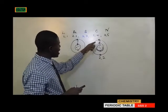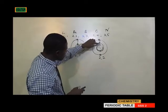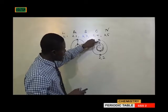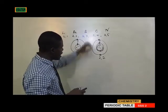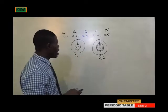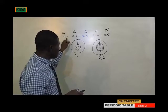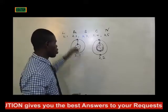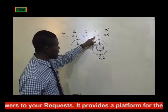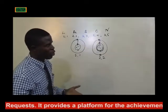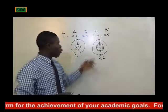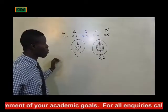Since ionization energy is the energy needed to remove the valence electron, and the nucleus is closer to the valence electron in beryllium than in lithium, more energy is required to knock off that electron because the attraction is greater. That is why ionization energy increases across the period — as nuclear charge increases, more energy is required to remove the valence electron.